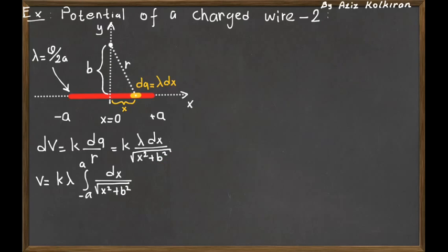Next we should integrate to find the total potential from x equals minus a to plus a. The integration of this quantity can be found from integration tables or by using change of variables. It is the logarithm x plus square root of x squared plus b squared, evaluated at the endpoints of integration.